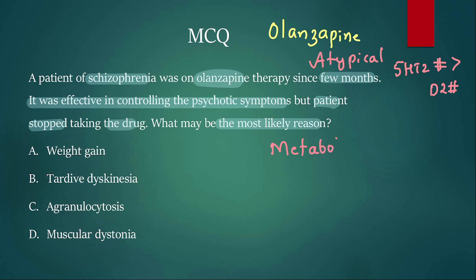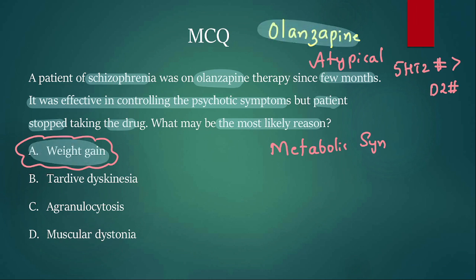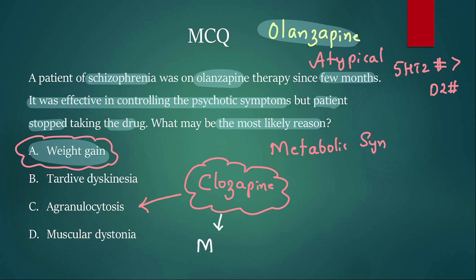A major drawback of atypical antipsychotics is they produce metabolic syndrome — weight gain, dyslipidemia, insulin resistance. Probably the patient got weight gain and discontinued treatment. Among atypical antipsychotics, maximum weight gain is caused by olanzapine. When comparing olanzapine, we should also mention clozapine — another atypical antipsychotic associated with agranulocytosis, myocarditis, seizures, and increased salivation leading to wet pillow syndrome. Comment which drugs have anti-suicidal effects.